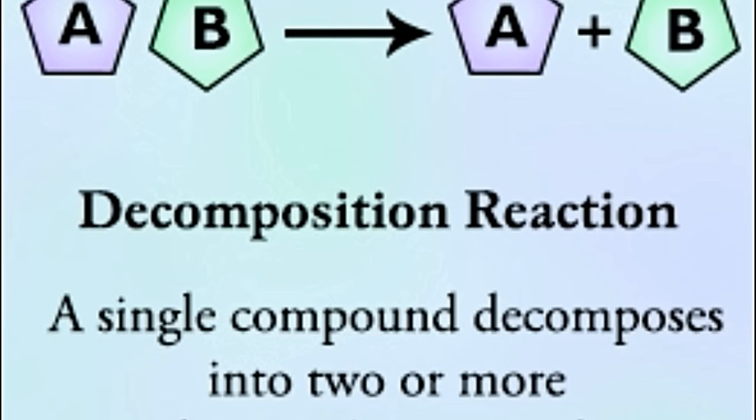Depending on the type of energy, decomposition reactions are classified into three main types, namely thermal decomposition. When a single compound is heated, it breaks down into multiple elements or compounds. This reaction is said to be a thermal decomposition reaction. Heat is used to loosen and break the bonds between the molecules of the compound.